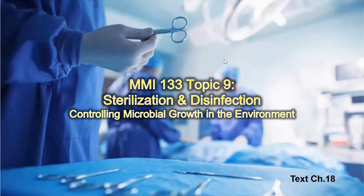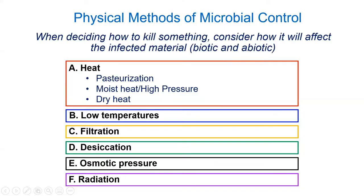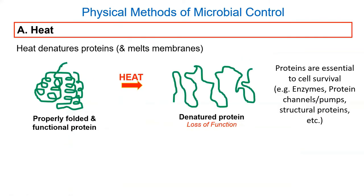So last day I had finished off on this slide and said we are going to talk about physical methods of microbial control, and after that we're going to talk about some chemical methods. You've probably seen many of these things before somewhere, so I'll try to point out where you may have seen them and what are some of the appropriate uses. The first thing we're going to talk about is heat - pasteurization, moist heat and pressure, and dry heat.